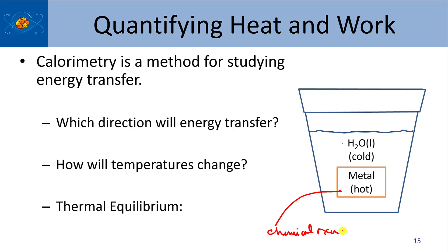When the chemical reaction is what we're studying, our system will be the chemical reaction and the surroundings will be everything around it. So in this example, if I take a piece of hot metal and I stick it inside the calorimeter, what do you expect to happen? Which way do you expect energy transfer to occur?